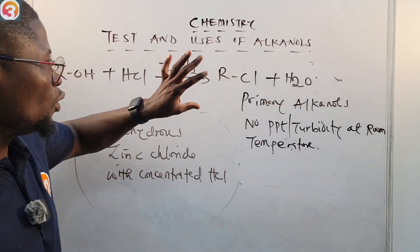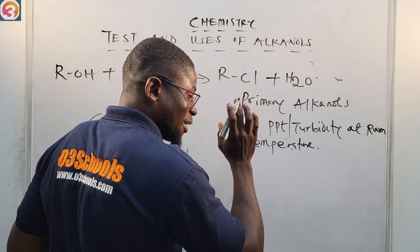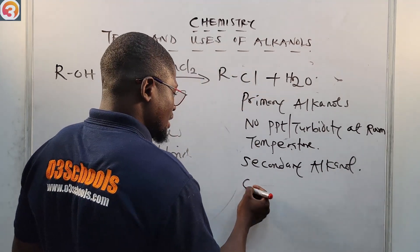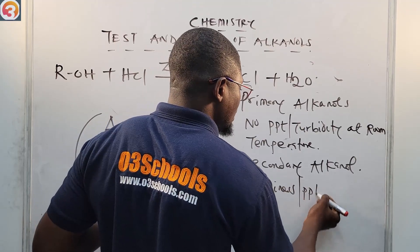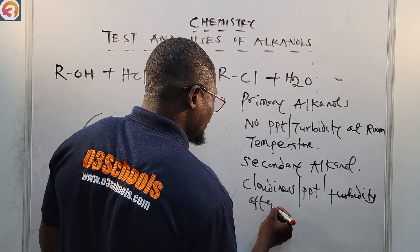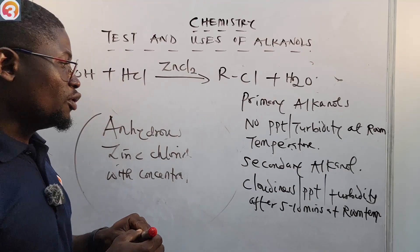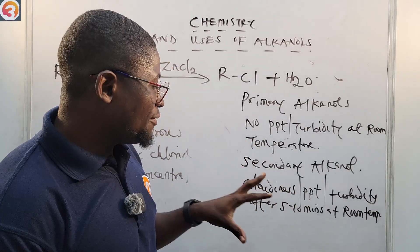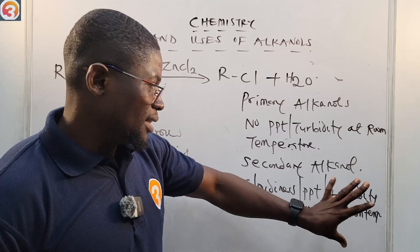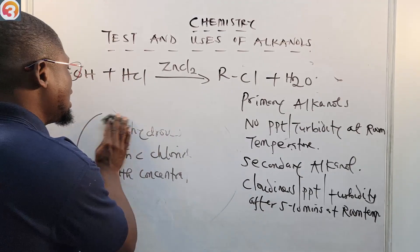For secondary alkanols, cloudiness, precipitate, or turbidity is observed — but it takes between five to ten minutes for you to see this observation, which tells you that the alkanol is a secondary alkanol.